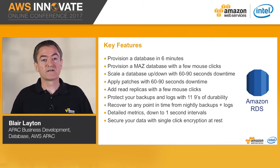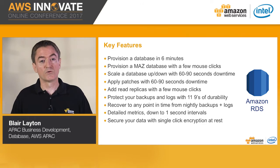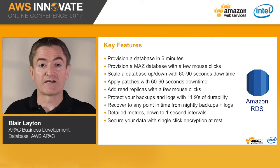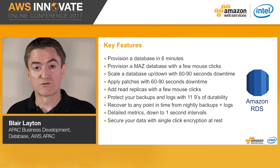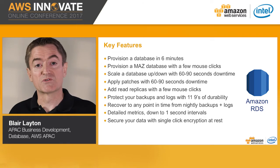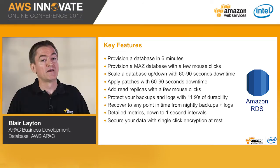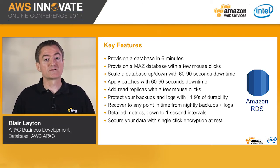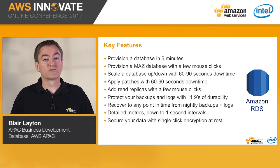This enables RDS to recover a database to any point in time by restoring a snapshot to a new instance and applying the logs up until the failure or user error occurred. All backups are kept in S3 with 11 nines of durability. RDS was the first service to introduce detailed metrics down to one second intervals. You can also secure your data with a single click to enable encryption at rest, and SSL is supported to encrypt data in transit, with the option to make it mandatory on Postgres and SQL Server.